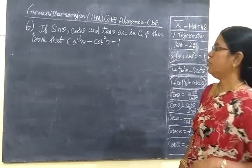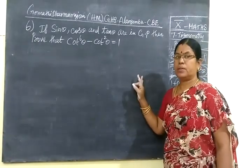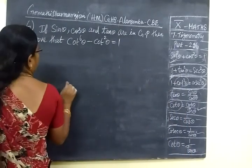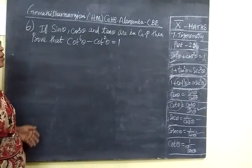Now we do part 2 strategies. This is the last question in exercise 7.1 and an important one. If sin theta, cos theta and tan theta are in GP, then prove that this one.